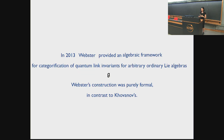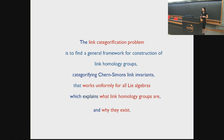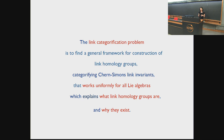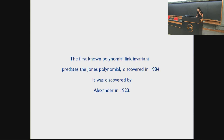In 2013, Ben Webster provided an algebraic framework for categorification that works for arbitrary ordinary Lie algebras. However, unlike Khovanov's construction, Webster's is purely formal — there's no computation that ever came out of it. So the link categorification problem is to find a general framework for construction of link homology groups categorifying Reshetikhin-Turaev link invariants that will work uniformly for all Lie algebras. Why such a strange question has a good answer — of course, string theory told us that it should.